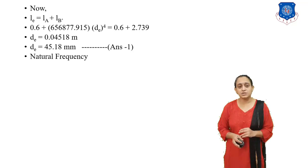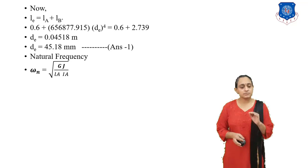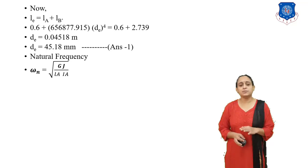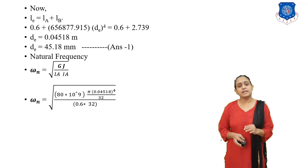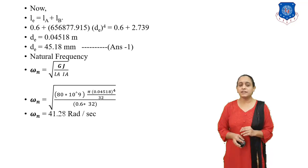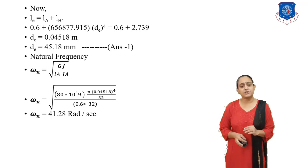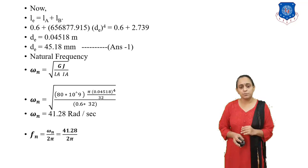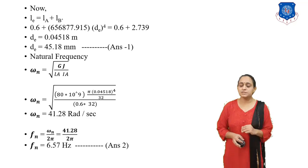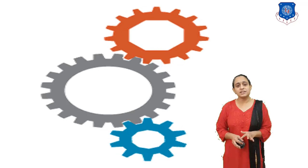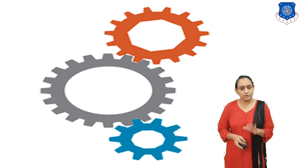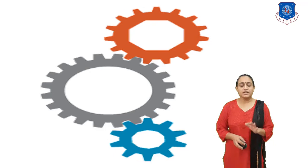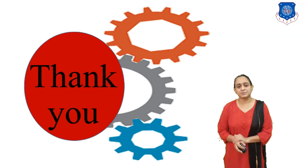The natural frequency is found using omega-n = sqrt(G·J / (LA × Ia)). By putting the values of LA and Ia, we get angular velocity omega-n = 41.28 rad/s, and frequency = omega-n / (2·pi) = 6.57 Hz. We have now covered both the theory and numerical for gear system vibration. If you have any query, you can ask. Thank you.